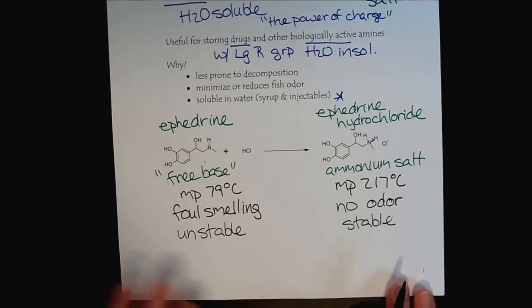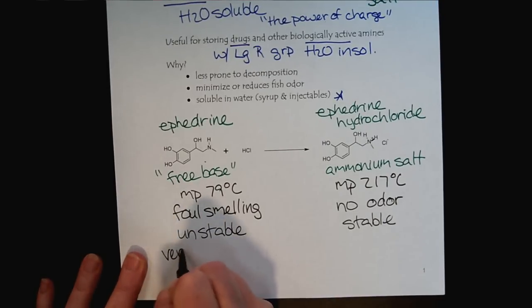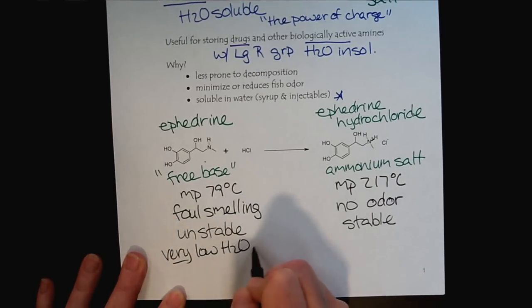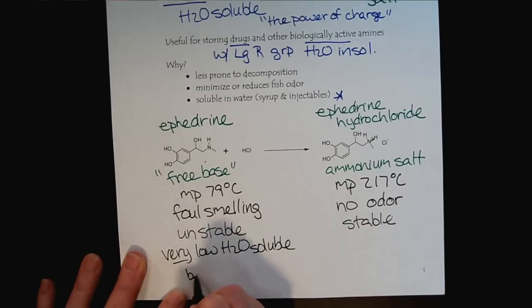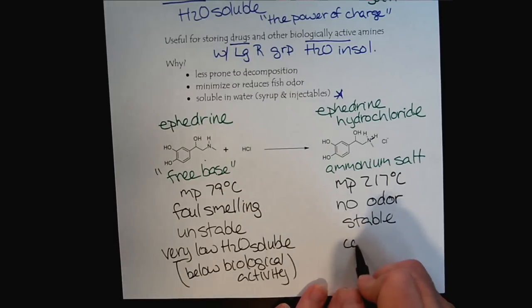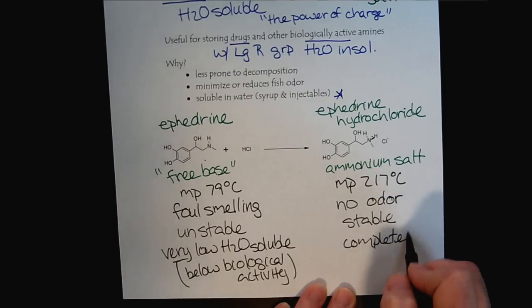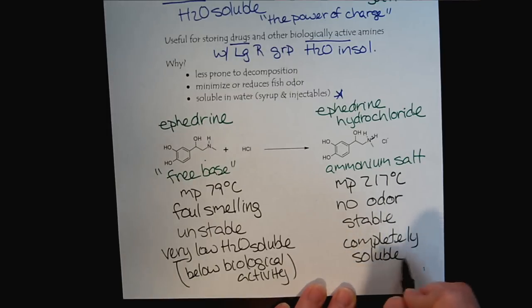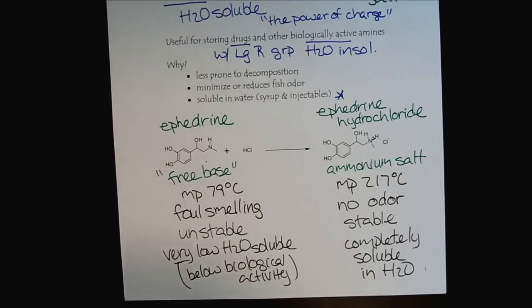Most importantly, ephedrine has very low water solubility, right below therapeutic health or below biological activity. Whereas the ammonium salt is completely soluble in water. That's what helps us to be able to use these amines, which are very biologically active, in medicines. Now let's practice a bit more on this important acid-base chemistry.